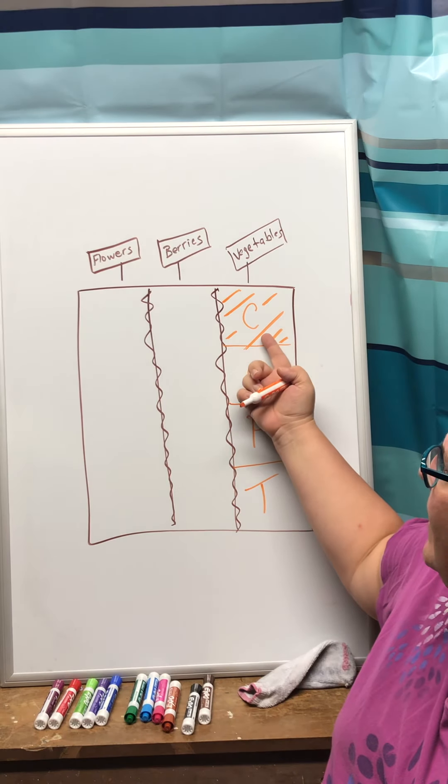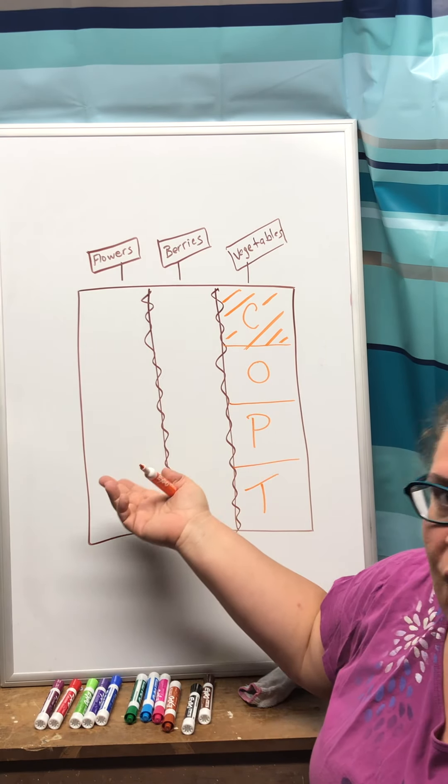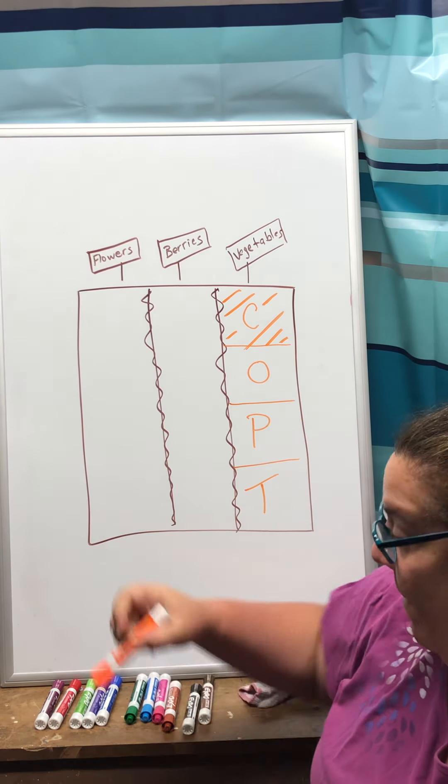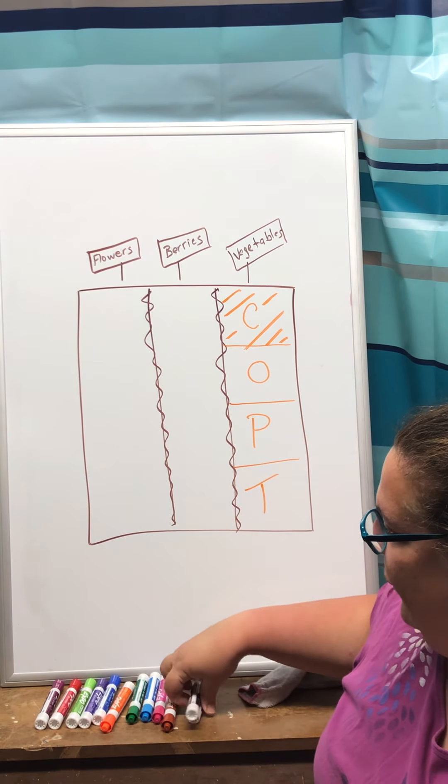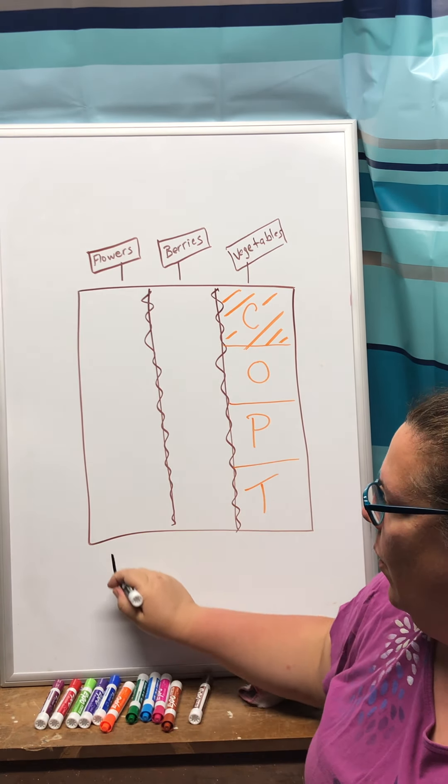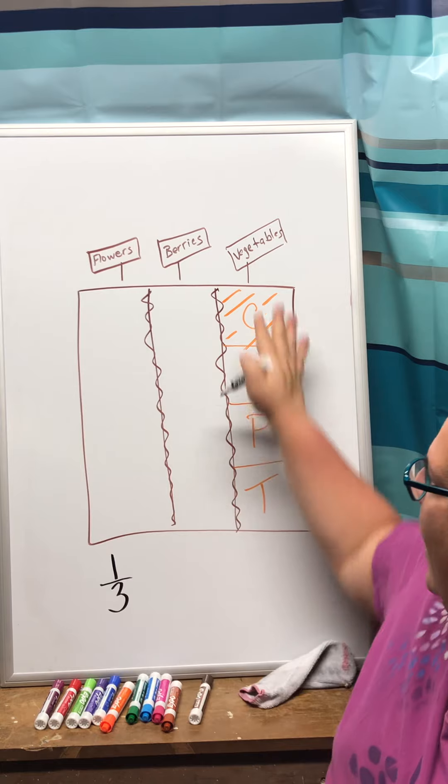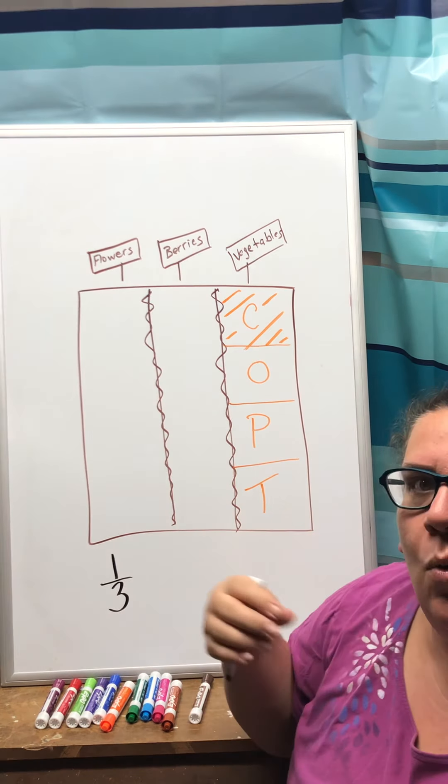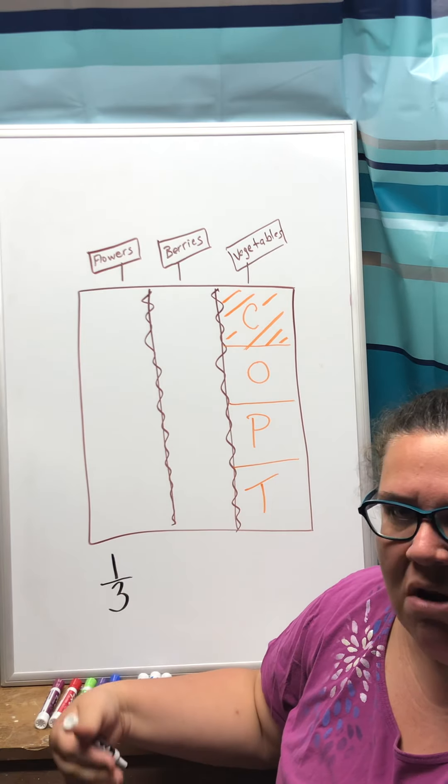So we have this section that we need to find out and this is where I'm going to also do my number model. So I know first that I cut the garden into three pieces so we're going to be looking at this 1/3. So I'm going to start with 1/3 and then what did we do to that 1/3?